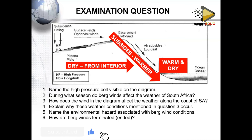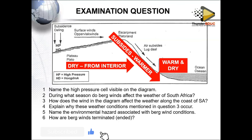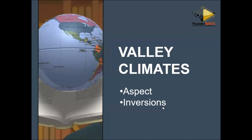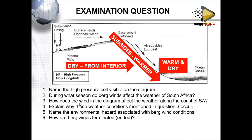Final question: how are berg winds terminated? Berg winds are terminated when the midlatitude cyclone reaches the coast. That is how berg winds will end. Those are berg winds — hope you are together. If there is any question, please don't hesitate to send it in.